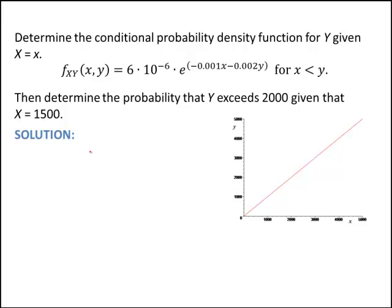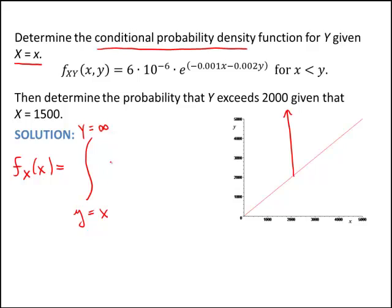So again we're trying to determine the conditional probability density function. And to get that, we need the marginal for x, since we're conditioning on x is x. So f of x, and we've said before, if I'm finding f of x, I actually integrate over my variable y. So for any x's here, my y's are going from this line to infinity, and this line is y equals x. So y's go from x to infinity, and I'm integrating my joint density function.